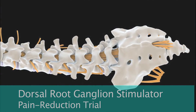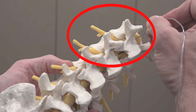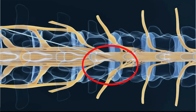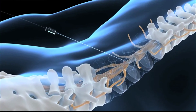With dorsal root ganglion stimulation, we put it over to the side and out on the back side of the single nerve root, so we have much more control over which locations we're actually applying the electricity to. Oftentimes we're able to get blockage of the pain signal at a subsensory threshold — meaning we are sending electrical stimulation which neurophysiologically blocks the pain signal, but the client does not feel any sensation whatsoever. They don't feel pain, and they don't feel the electrical stimulation either.